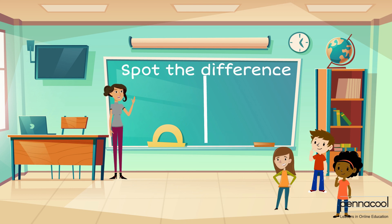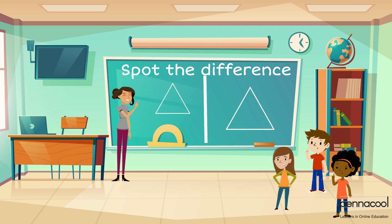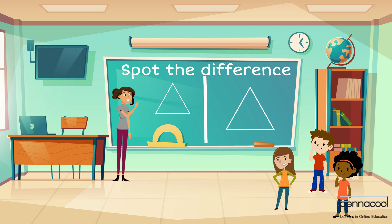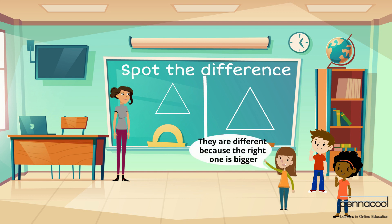For the last round of the game, Miss Allie showed two triangles. They both had three equal sides and the same angles. However, there was one difference. Samantha noticed that one triangle was slightly larger than the other, which made the triangles different.